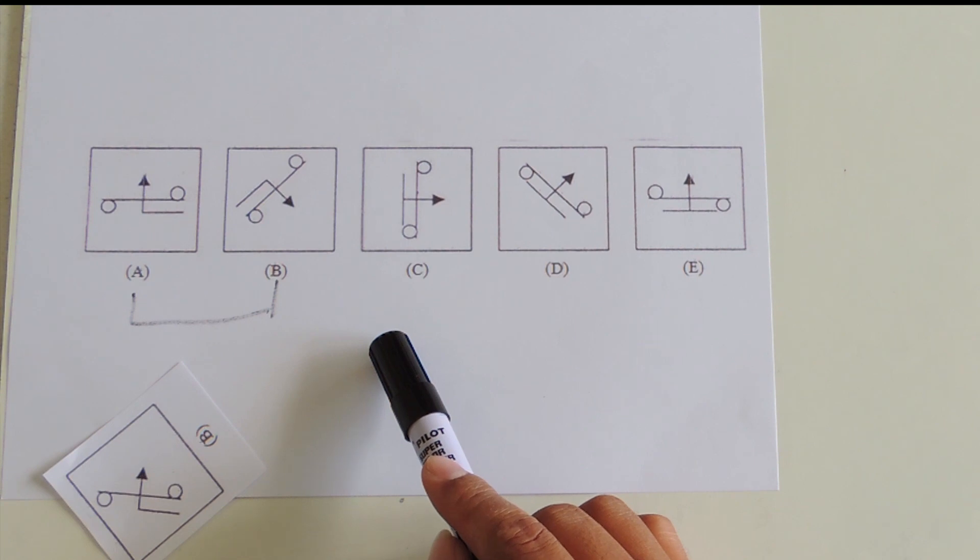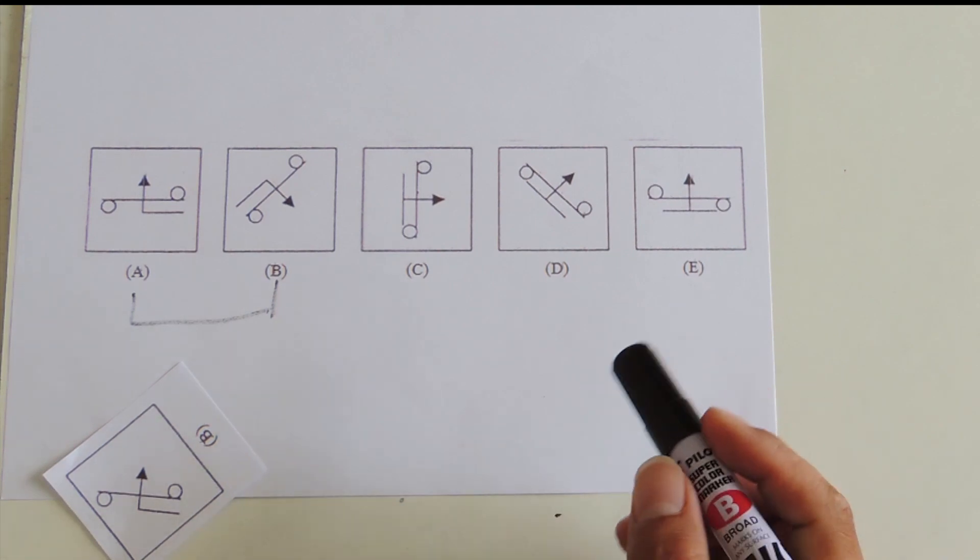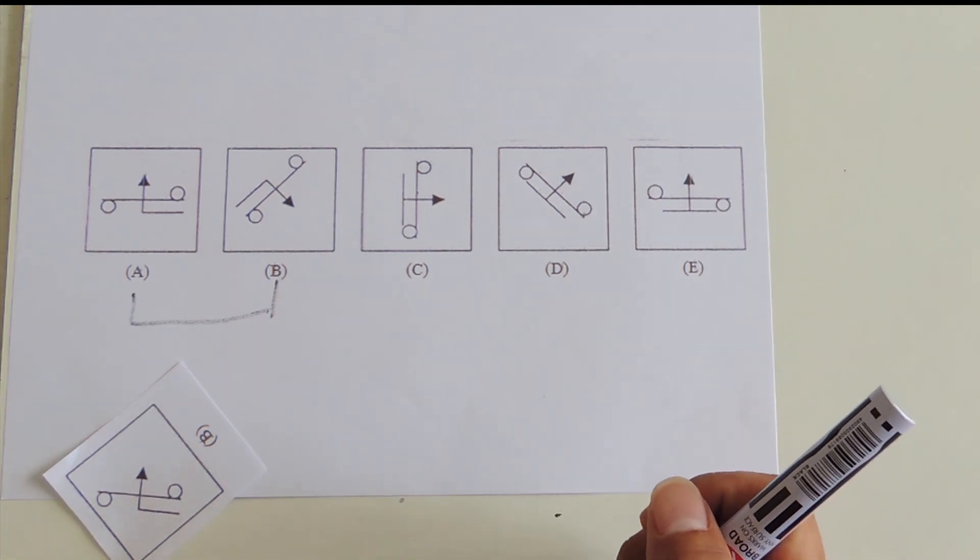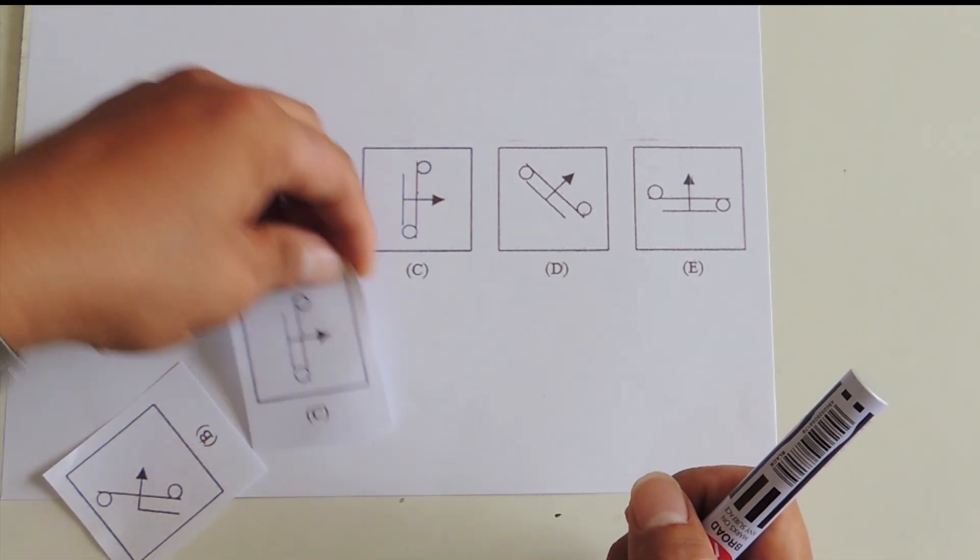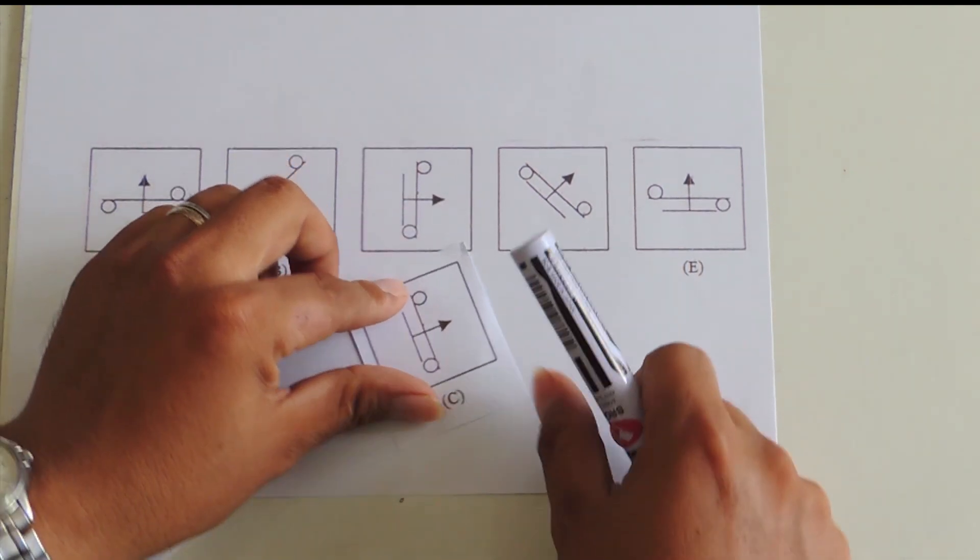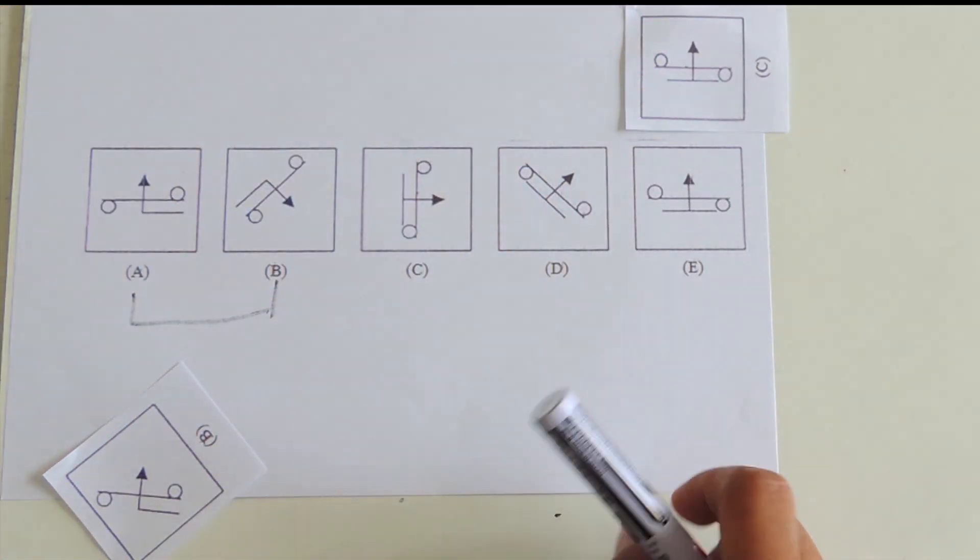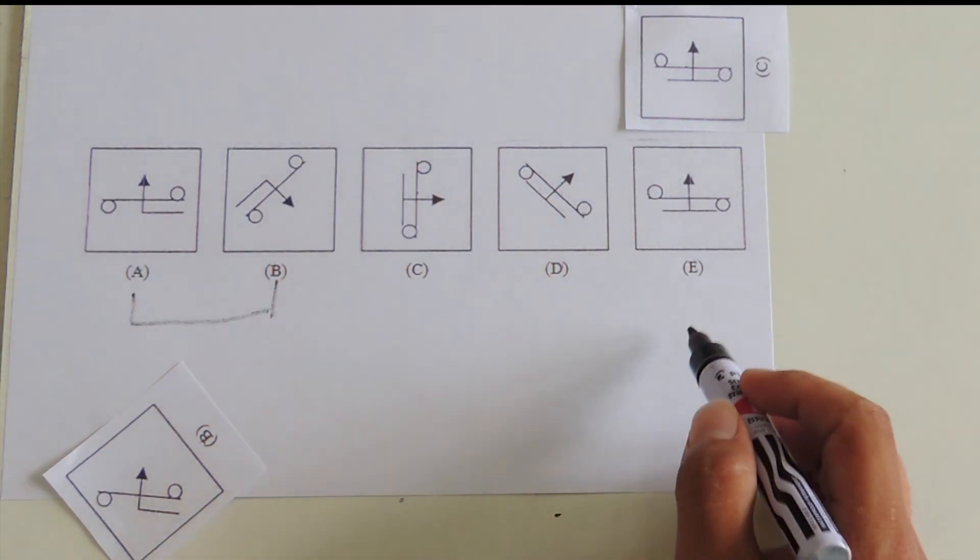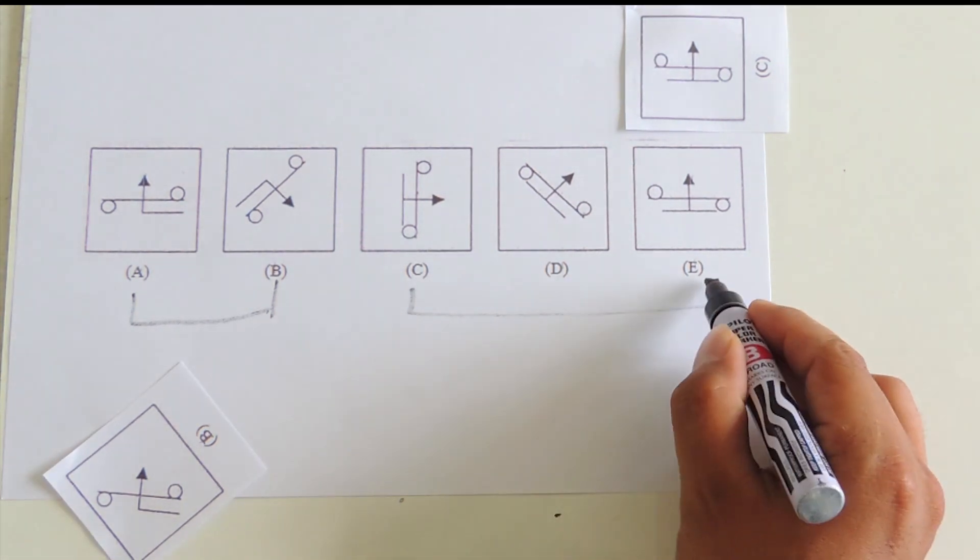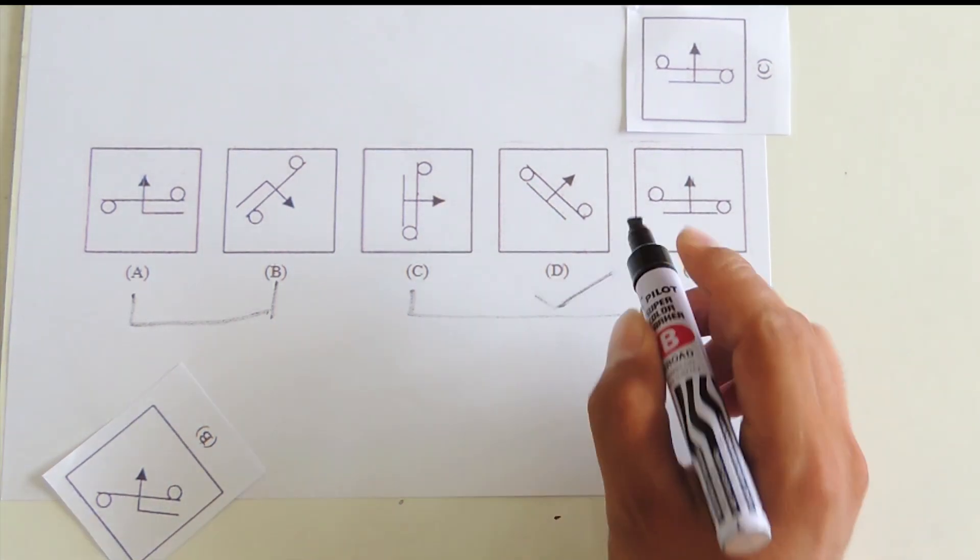Options C and E are also the same. If we position option C's arrow upward, it will look like option E. Therefore, C and E are equal, so the correct answer is D.